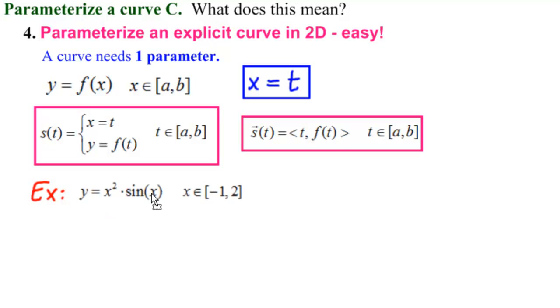So what's a decent example? Let's try Y equals X squared times sine of X, and here's our interval, X between minus 1 and 2. You can see it's a real valued function in two dimensions, right X and Y, and we have an interval, so we've got a curve.